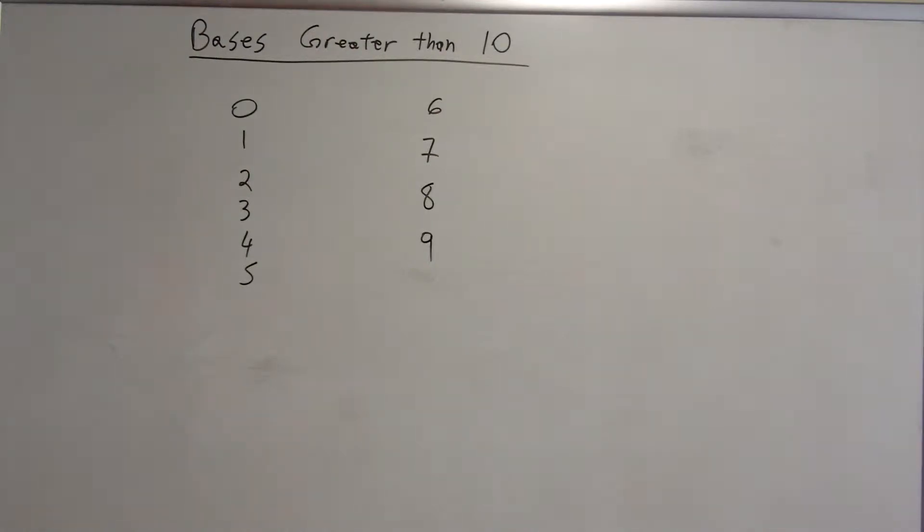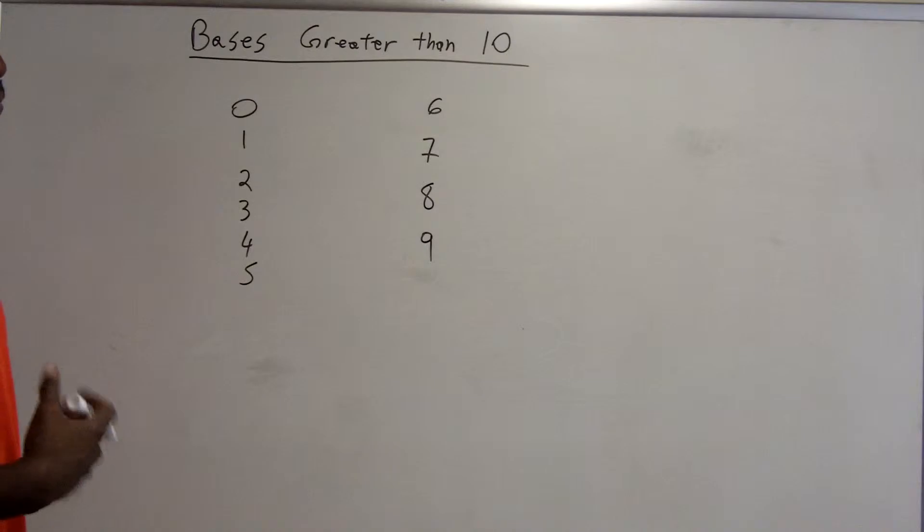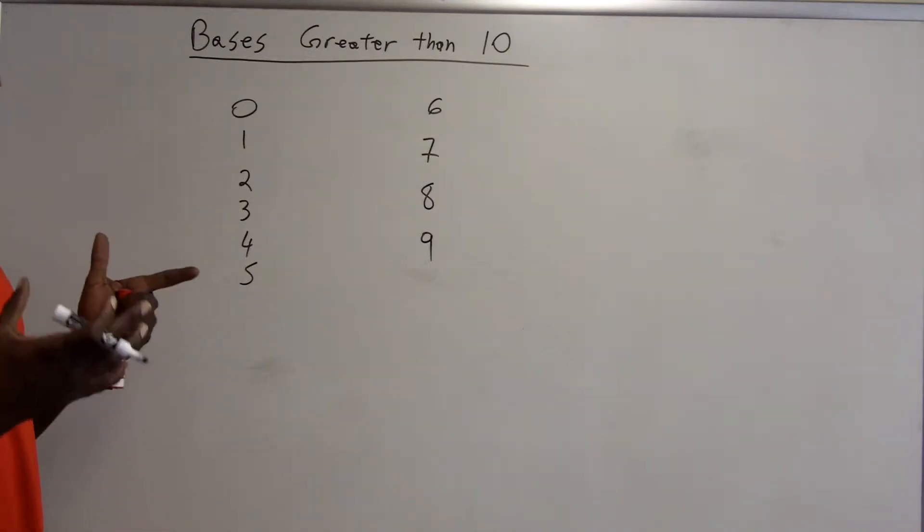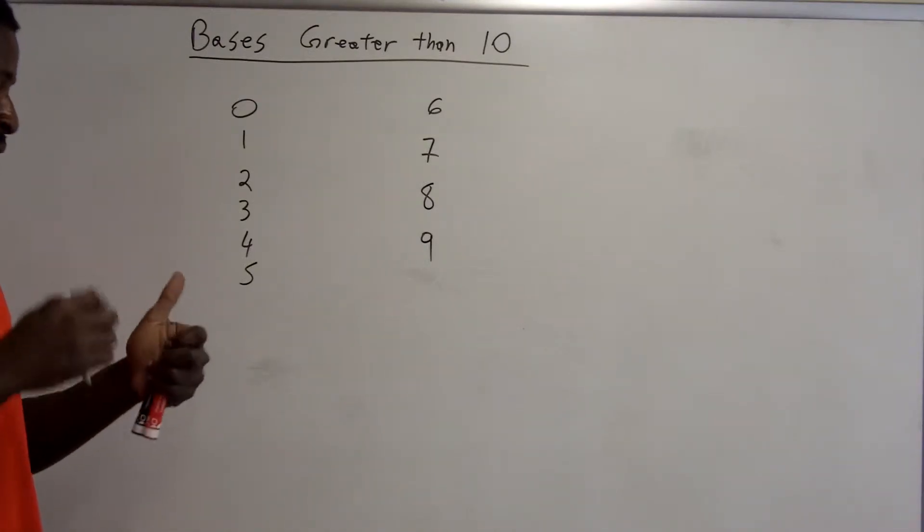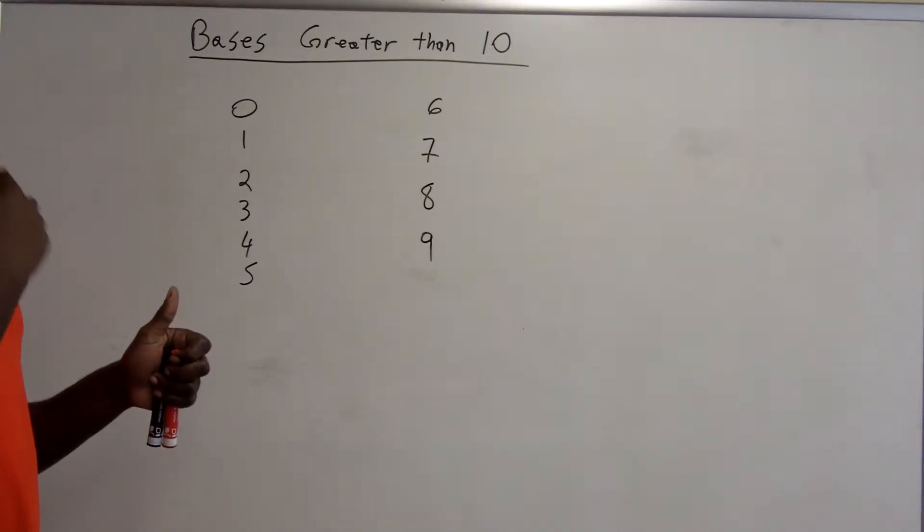Since you can use any counting number as a base, it stands to reason that you can use a base that is larger than the number 10. But what happens, what symbols, what numerals do you use when you have a base larger than 10? Because in order to have a true place value system, you need a symbol, you need a base, and a symbol to represent all the counting numbers that are less than the base.